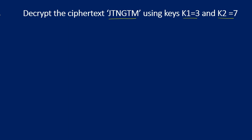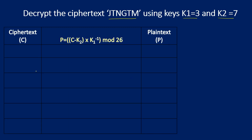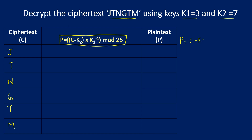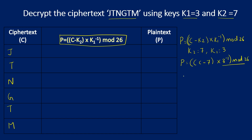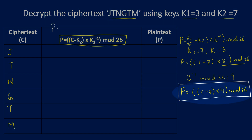We need to decrypt the word 'JTNGTM'. We make a three-column table. The decryption formula is (C − k2) × k1⁻¹ mod 26, where k2 = 7 and k1 = 3. Substituting, this becomes (C − 7) × 9 mod 26, since 3⁻¹ mod 26 = 9. This is the formula we will use to decrypt each letter.